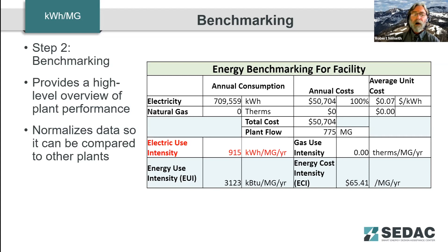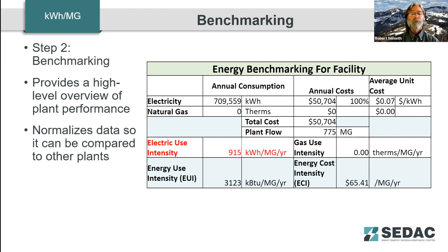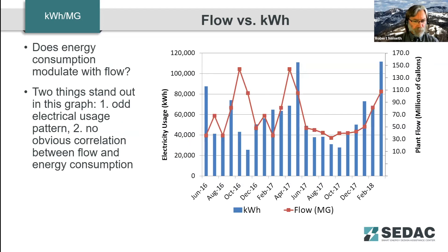Some plants use just electricity with no natural gas usage, but we'll sometimes have an additional column with monthly therm consumption. We take the flow and kilowatt hours and plot them on a chart. Two things kind of stand out here: there's an odd electrical usage pattern. You can see a high of over a hundred thousand and a low of 25,000 kilowatt hours. Sometimes these are easy to explain because they're billing errors from the utility; other times, they raise questions about what's going on at the plant.